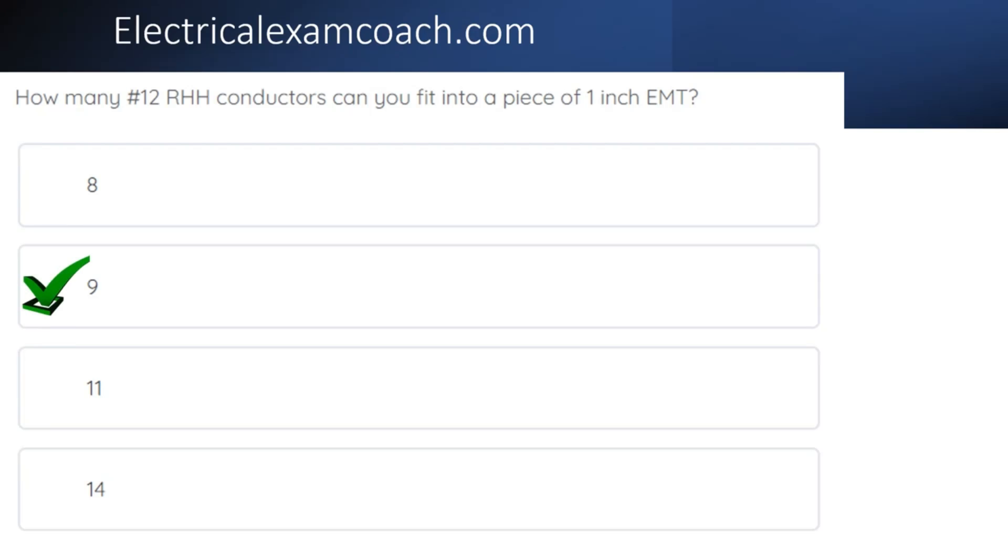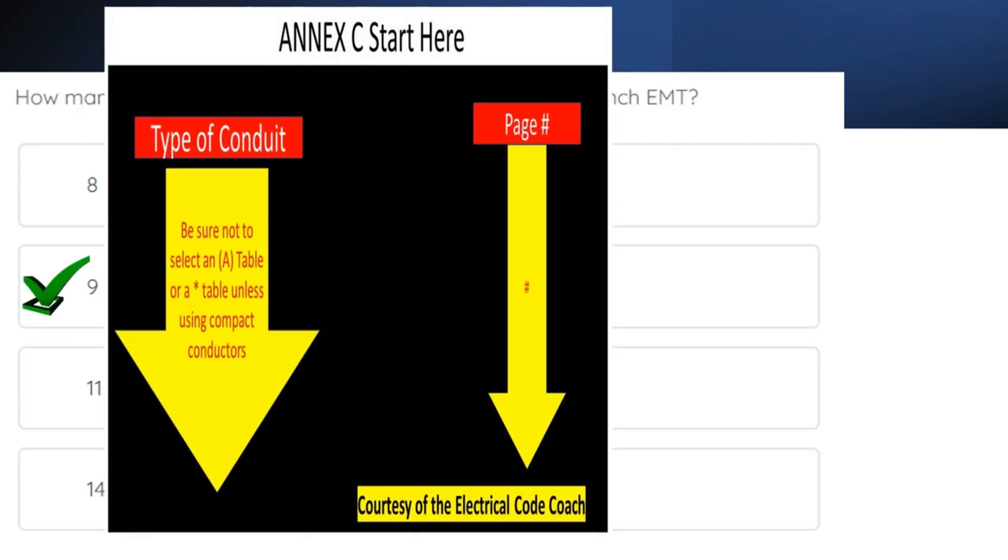We're going to start this process out at the beginning of Annex C. At the beginning of Annex C, it's going to list our type of conduits and the page number that they're on. We're going to be sure not to select an A table or a star table unless we're using compact conductors.